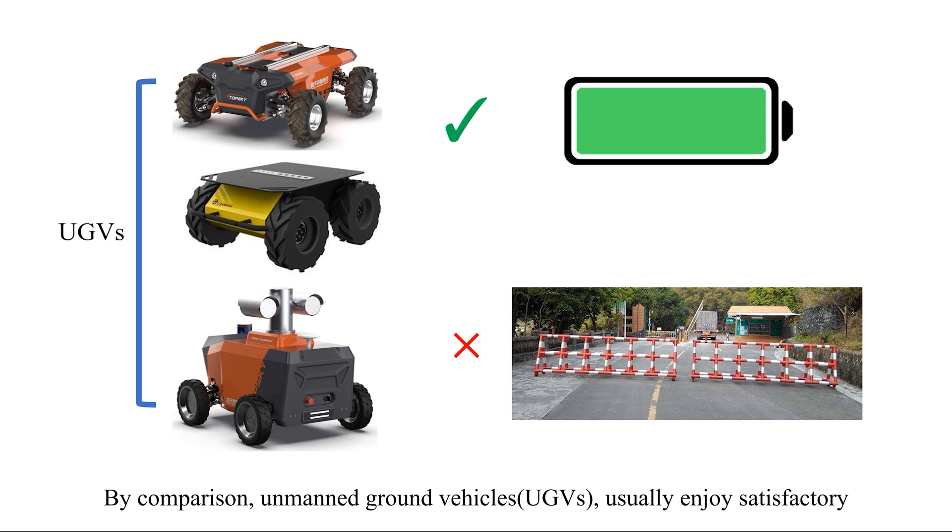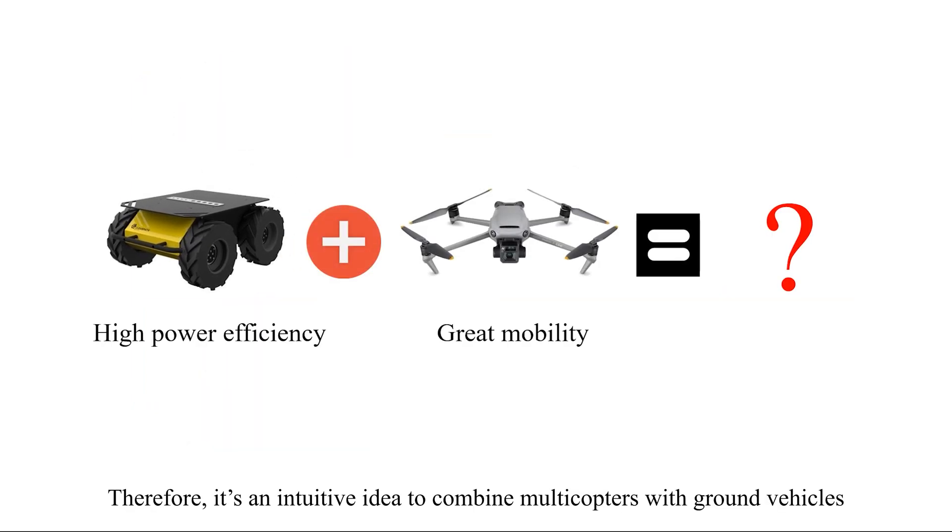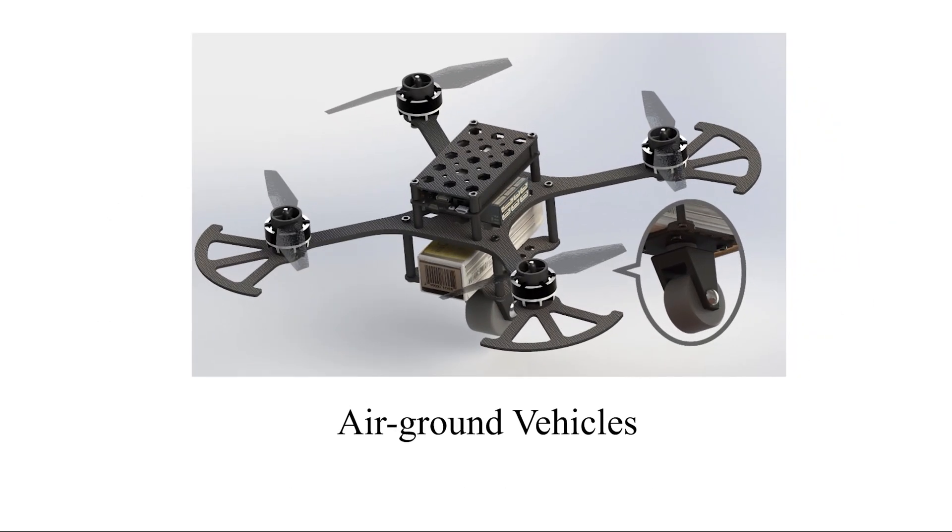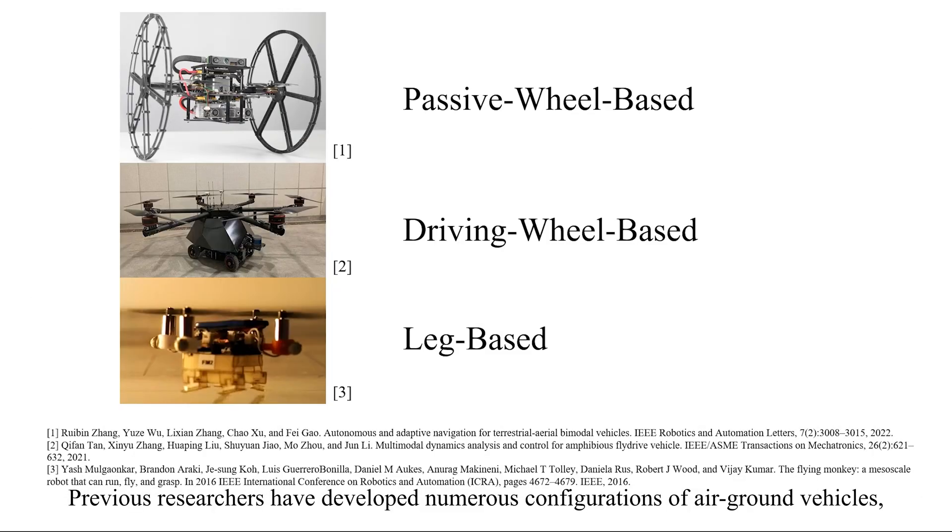By comparison, unmanned ground vehicles (UGVs) usually enjoy satisfactory power efficiency but can't cross complicated terrains due to their lack of mobility. Therefore, it's an intuitive idea to combine multicopters with ground vehicles to take the complementary advantages of ground vehicles' high power efficiency while maintaining multicopters' great mobility. This way we have air-ground vehicles.